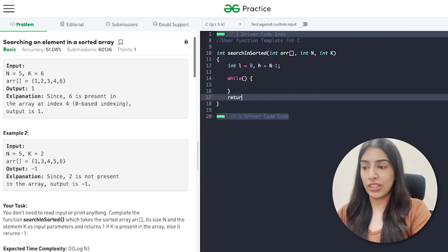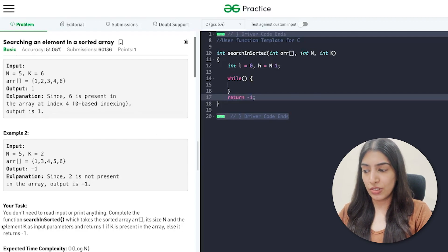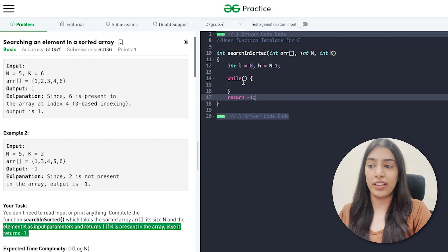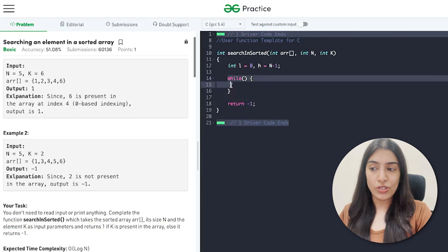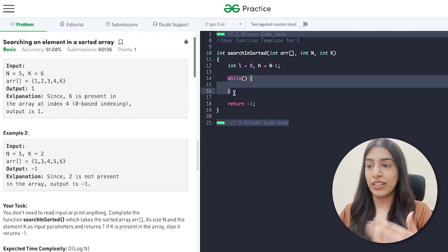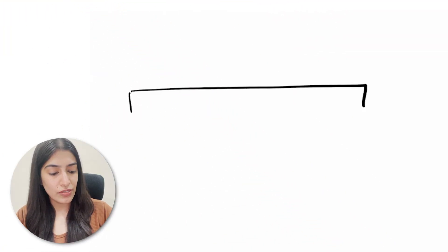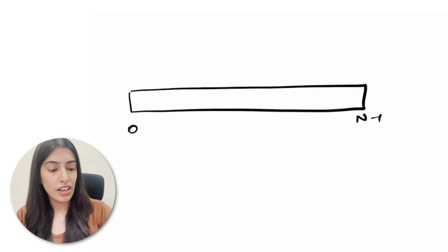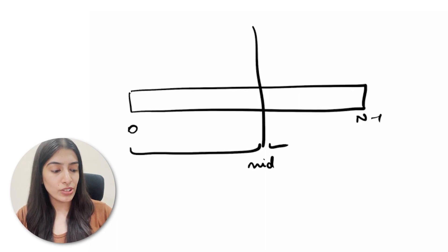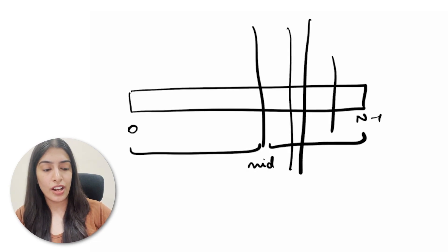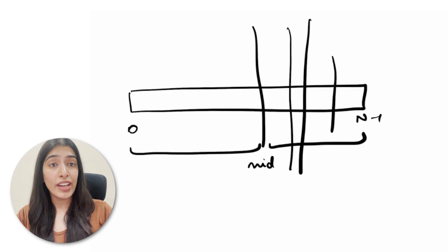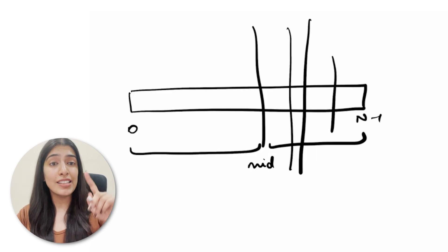If we don't find the element, we return -1 as mentioned. When we find it, we return 1. What is the condition to keep running? We check between index 0 and n-1, then between 0 to mid, or mid to n-1, and keep dividing into halves until there is only one element left to compare.